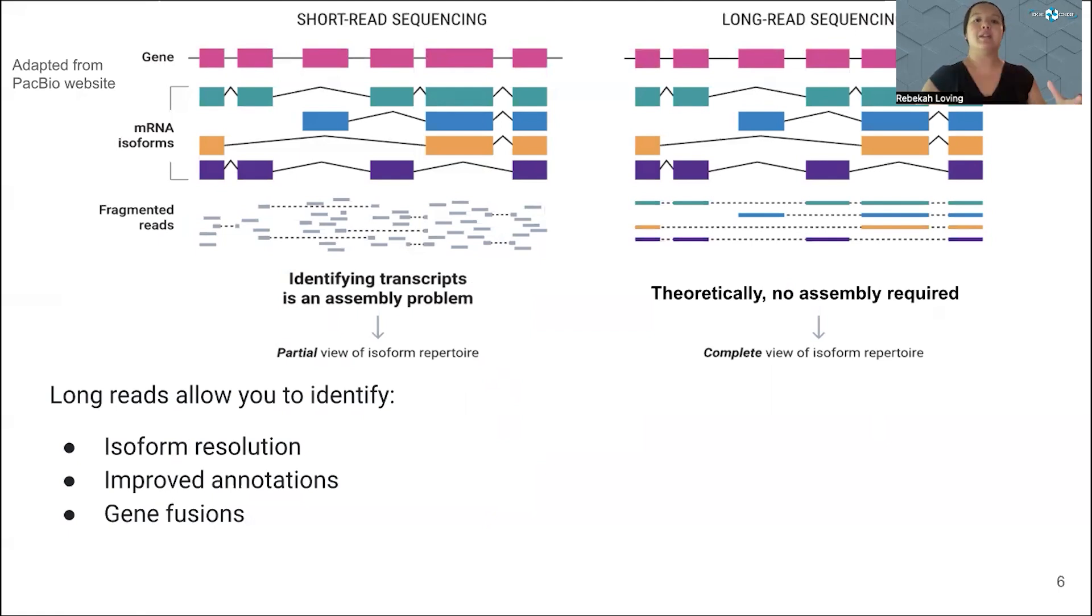In long read RNA sequencing, you are capturing the full length molecule. So you don't need to do the same assembly process of the fragmented reads. Instead, you can directly try to count what molecules were present in your sample. This allows us to have isoform resolution and improved annotations for both humans and model organisms, but also move into non-model organisms, annotating those genomes so we can understand the complexity that exists in the animal kingdom.